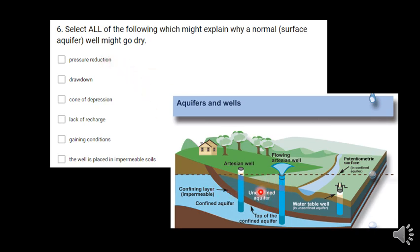Number one is pressure reduction. That's not an issue because it's not even under pressure. The confined aquifer is under pressure.